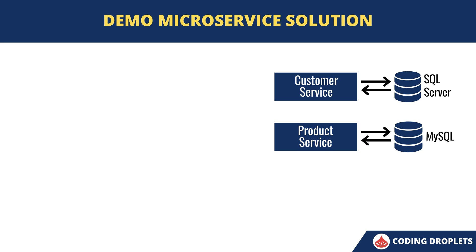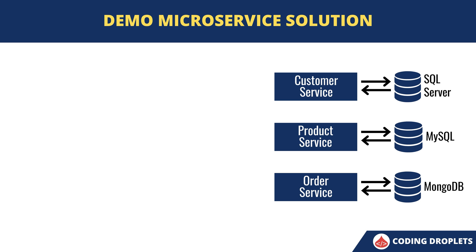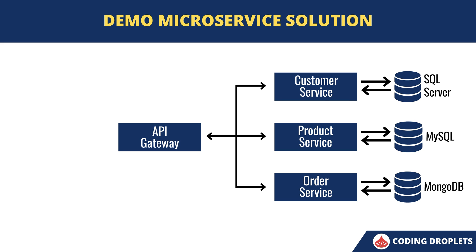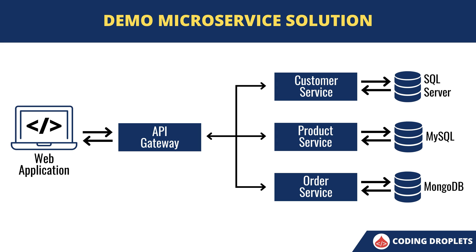In the next video we will create another microservice named order service which uses MongoDB database. That module will handle the orders of different customers, including the products they ordered and the quantity of each product in the order. After that we will create an API gateway which will route the API requests to these three services. Then finally we will create a web application which only communicates with the API gateway, from which we will be able to create customers, products and orders.